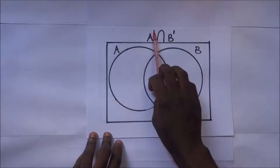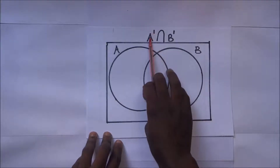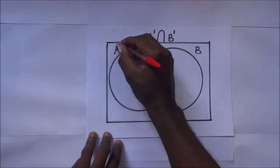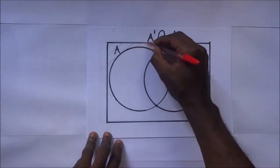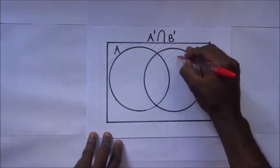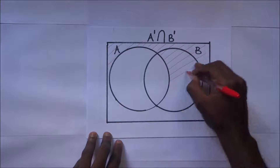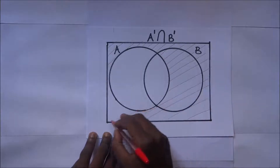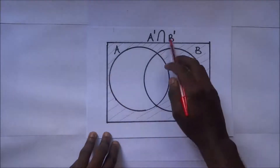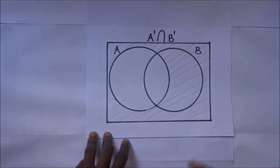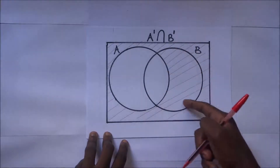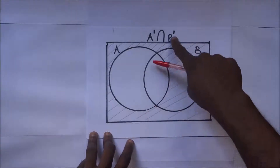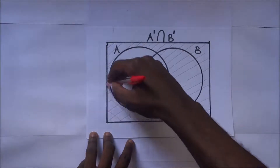Now A complement means we shade everything else but A, so we shade outside A. Shading set A complement means you are going to shade outside set A and leave set A unshaded. Then B complement means we are going to shade outside set B — this is set B — so B complement means you shade outside B and leave B without shading it. We shall shade B complement in the reverse direction.